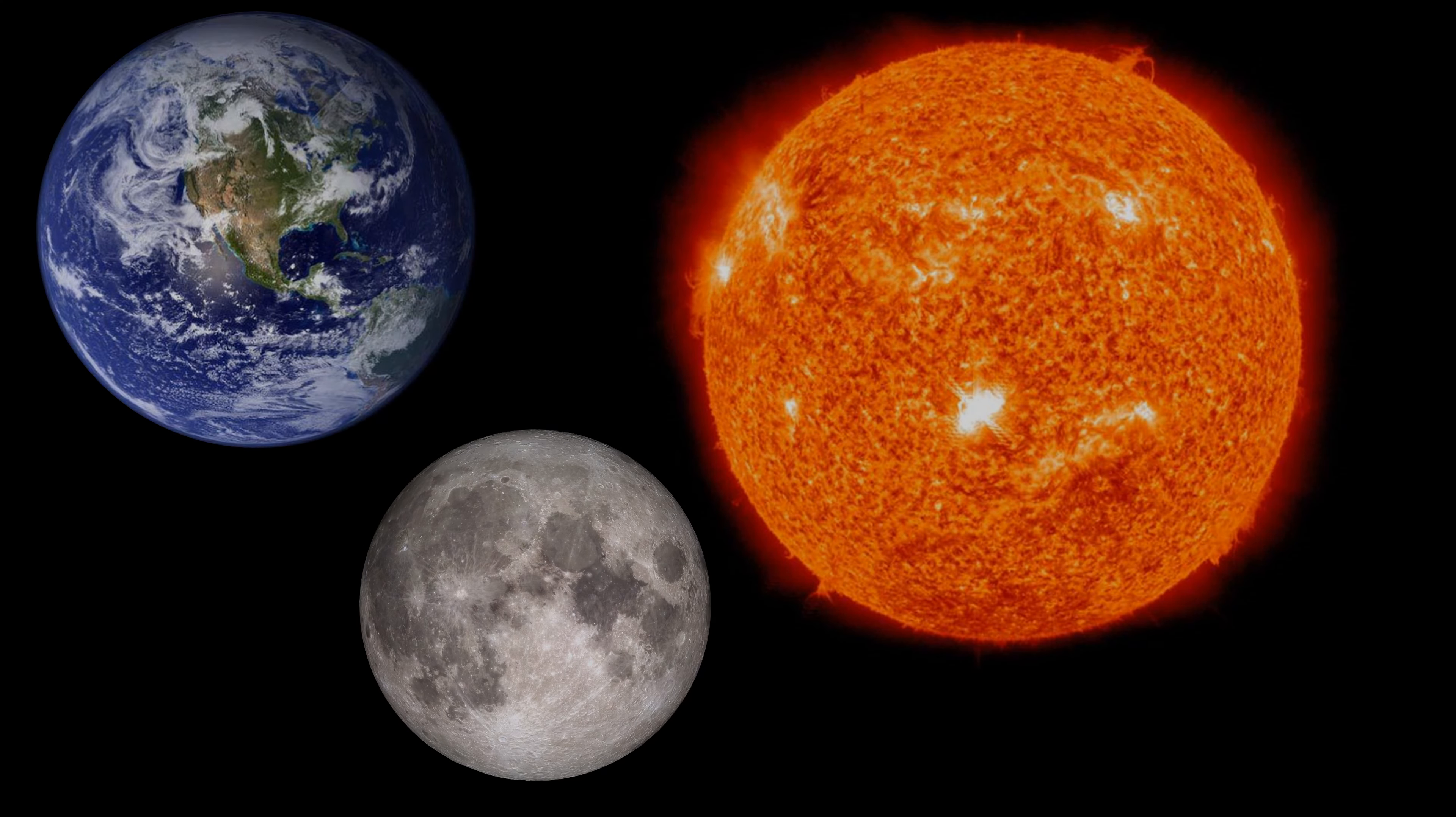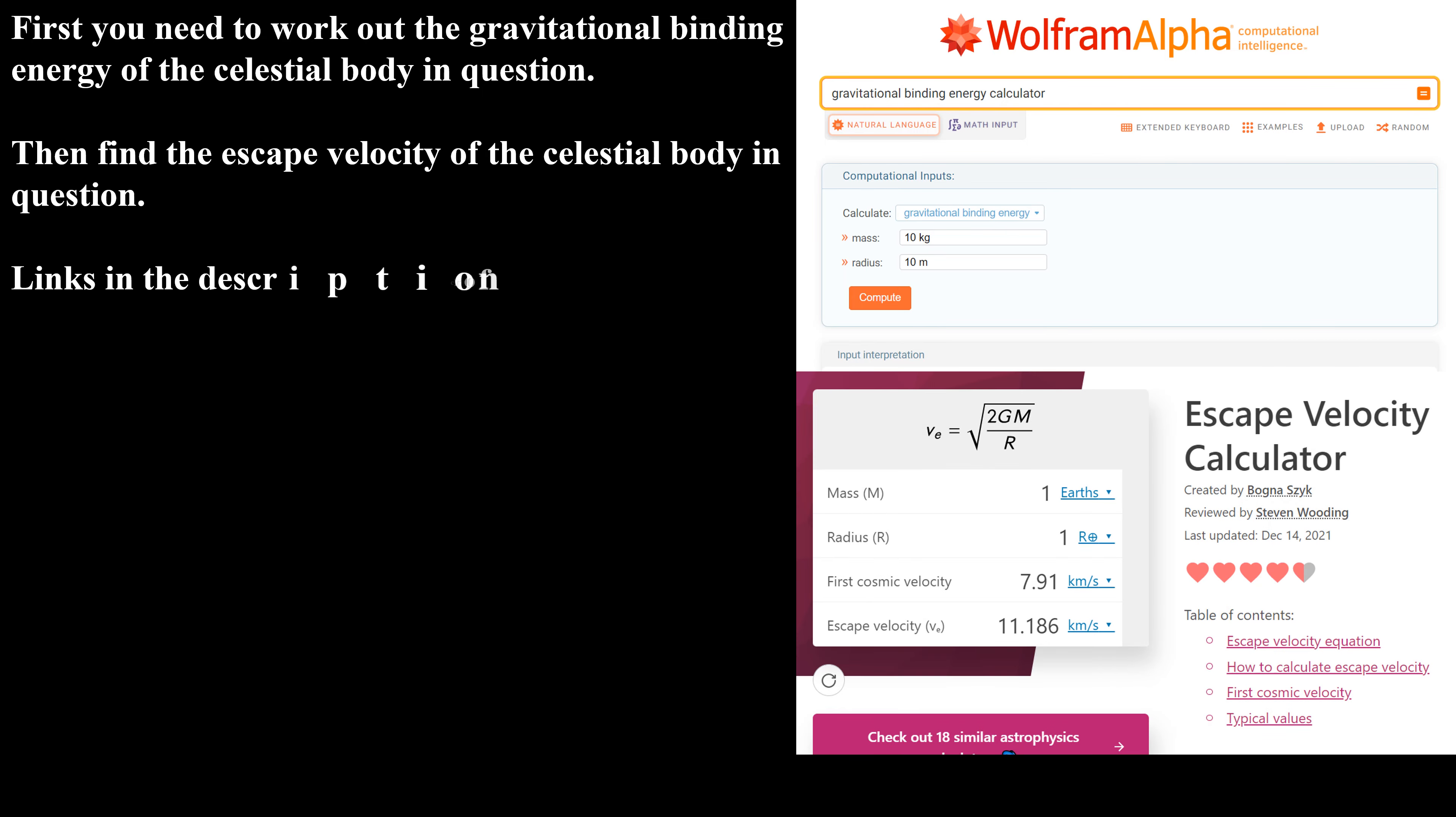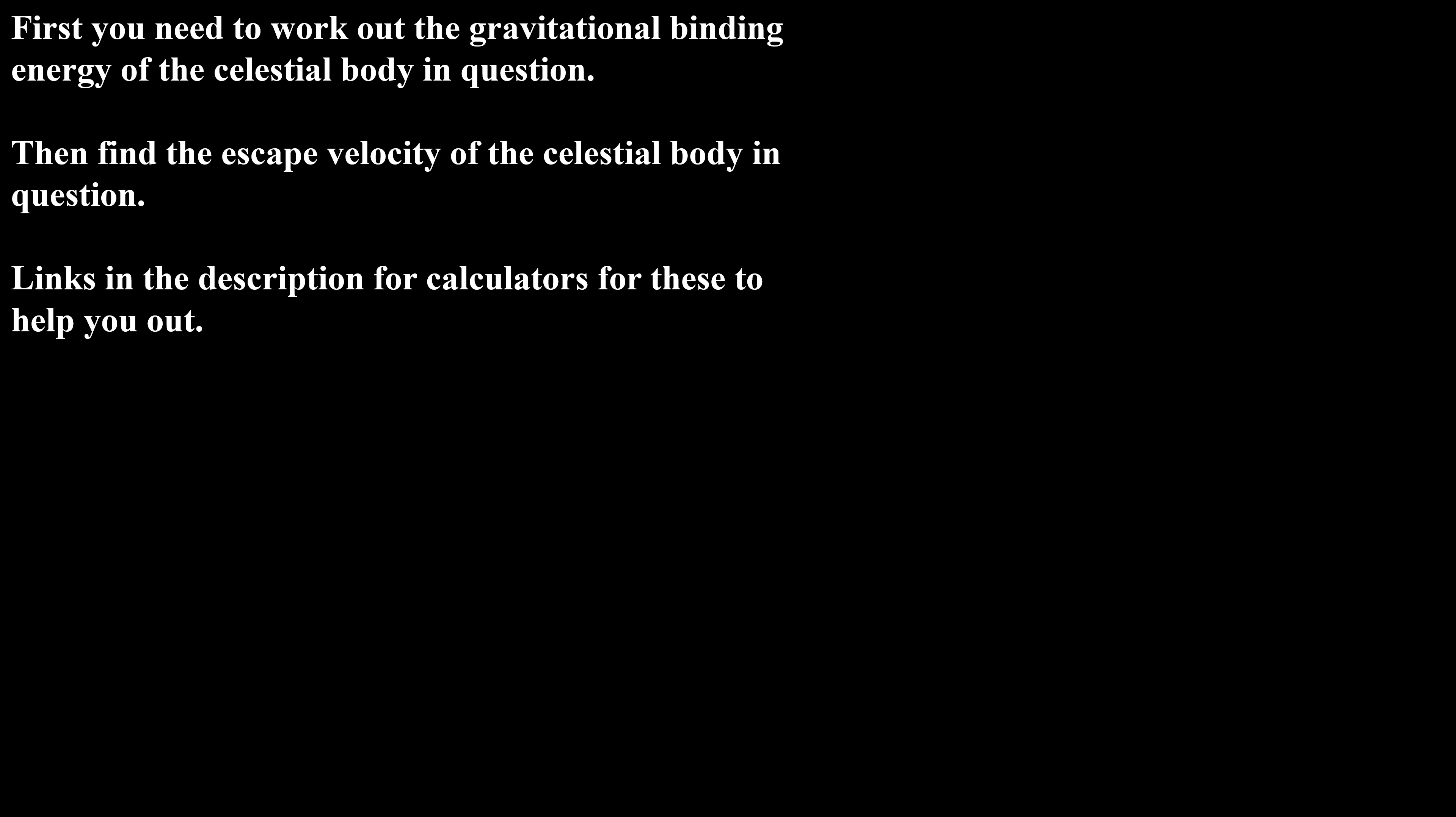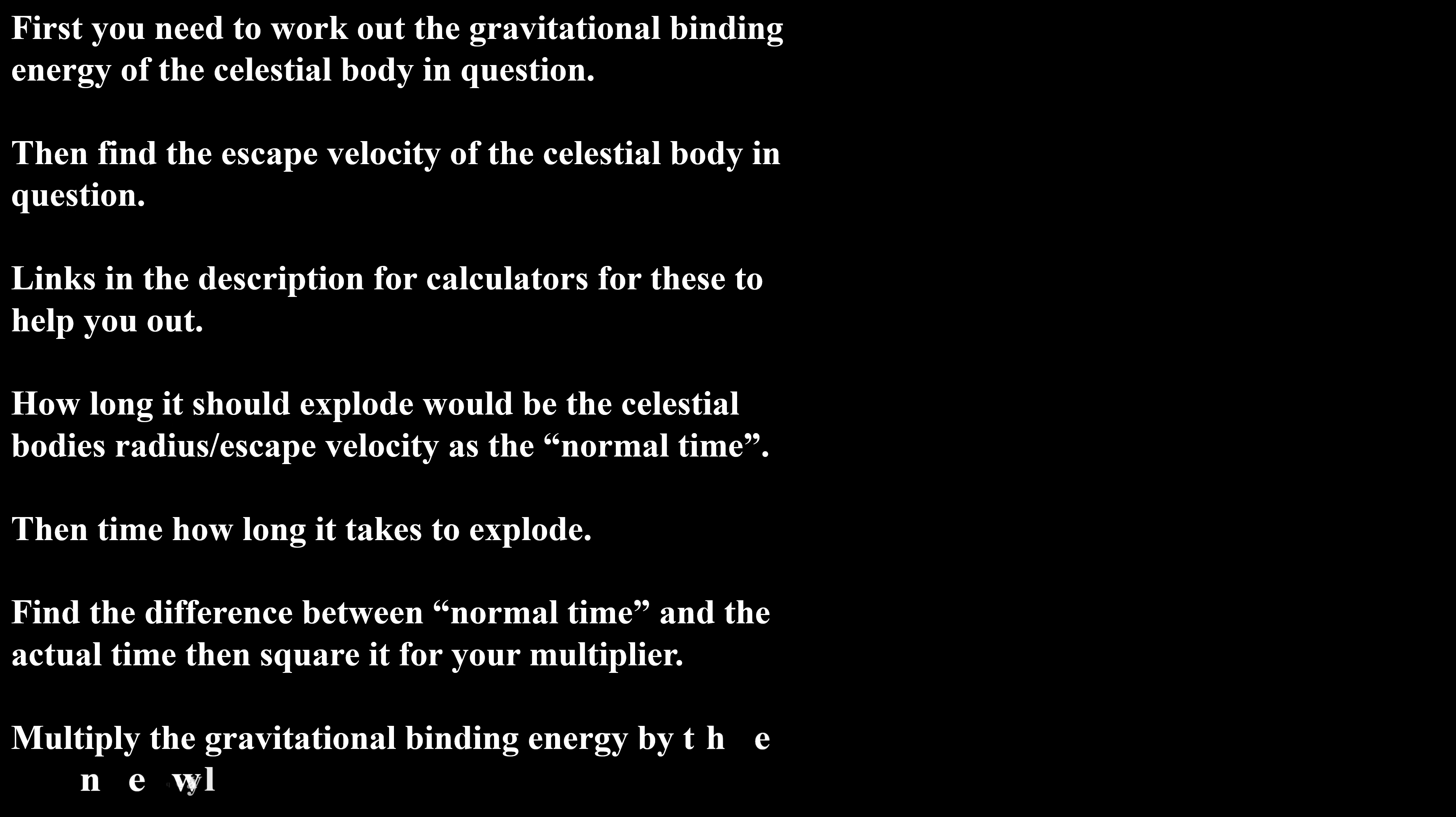Now, let me help you so that you guys could work out this for yourself and discover the energy of destroying certain planets or stars or moons, whatever you want. First, you need to work out the gravitational binding energy of the celestial body in question. Then, find the escape velocity of the celestial body in question. Links in the description for calculators for both of those, just to help you out. Then, you should look at how long it should take to explode with a celestial body, given its radius divided by its escape velocity. Then, plot a stopwatch and time how long it actually takes to explode. Next, you need to find the difference between the normal time and how long it actually exploded in the scene. Once you get this difference, you shall square it for your multiplier. Using this multiplier, you can then times it by the gravitational binding energy and you will get your final answer. This will be the energy you were looking for.